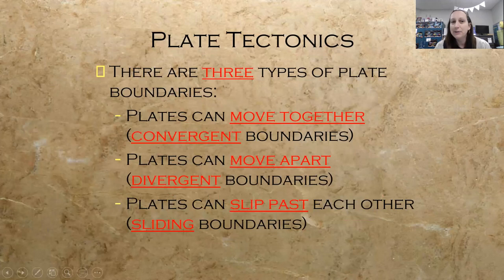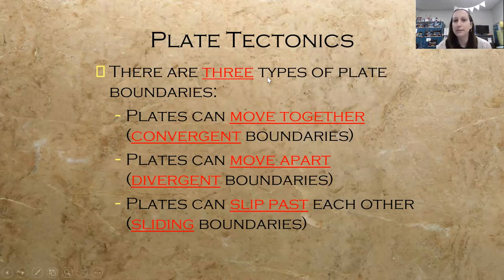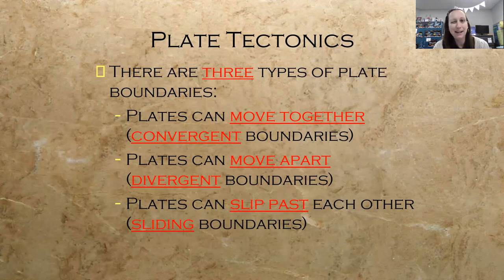There are three types of plate boundaries. Plates can move together — convergent boundaries. Plates can move apart — divergent boundaries. And plates can slip past each other — transform boundaries. These slides are mostly from the JLab teacher share PowerPoint that they give to teachers in the program. I highly recommend JSAT 5 to all the fifth grade teachers out there.